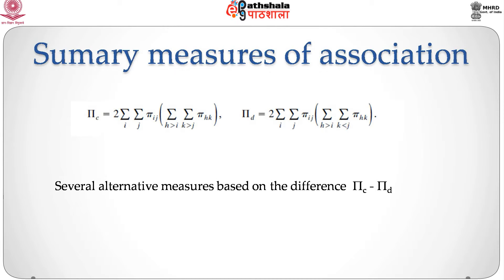We can derive the corresponding population measures: the probability of concordance π_c and the probability of discordance π_d. π_c is defined as 2 times the summation over i and j of π_ij times the summation over k > i and h > j of π_hk. Similarly, π_d is given by the analogous formula with the summation over k > i and h < j. Most measures of association will depend on the difference π_c minus π_d.